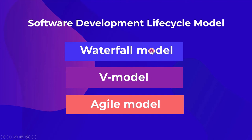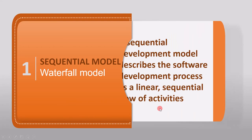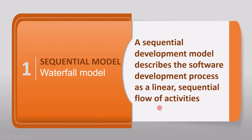The Waterfall model and V-Model are referred to as sequential or incremental models, and the Agile model is referred to as an iterative model. For explanation purposes, we will consider the Waterfall model as a sequential model, the V-Model as an incremental model, and Agile as an iterative model. We will now discuss the first software lifecycle model — the sequential development model, of which the Waterfall model is an example.